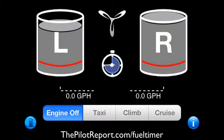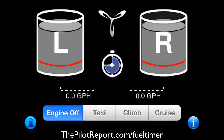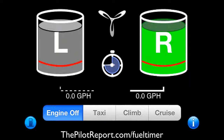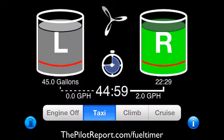Going back to the main screen, you select the fuel tank you want to burn from. I can see 45 and 45. Now you press and hold on the tank you want to run from — if running on the right tank, press and hold the letter R for one second until it turns green. Once the engine is started, press the taxi button at the bottom. Based on two gallons per hour, the right tank shows 22 hours and 29 minutes of fuel remaining, with a total onboard of about 44 hours 59 minutes.